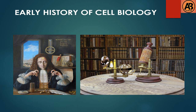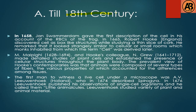Now I am going to describe the history of cell biology. History is very broad, but I will describe it briefly. Till the 18th century: in 1658, Jan Swammerdam gave the first description of the cell in his account of red blood cells of the frog. Malpighi and Hooke's colleague made detailed studies of plant cells and established the presence of cellular structure throughout the plant body, from 1628 to 1694.